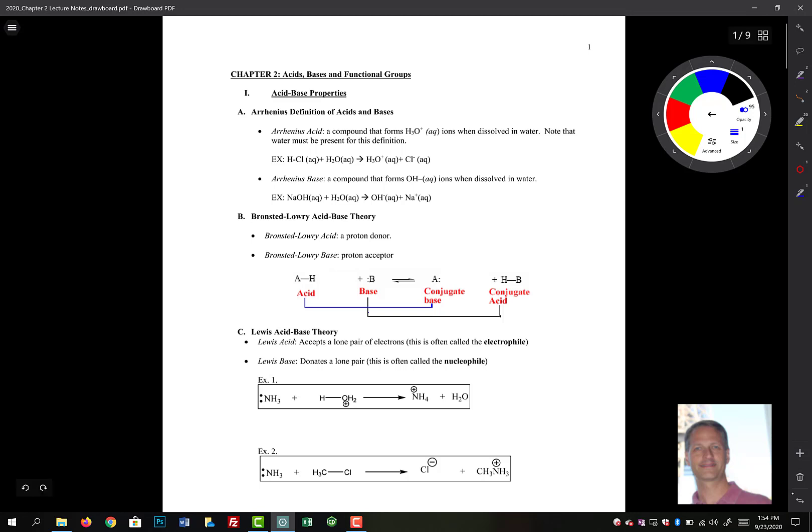Some of them you've probably been introduced to in general chemistry. You recall there's the Arrhenius acid, and that's a compound that forms H3O plus when dissolved in water. The key thing to note is that water must be present for this definition to be held true. The example we give in GChem is hydrochloric acid plus water gives you H3O plus, the hydronium ion, and chloride.